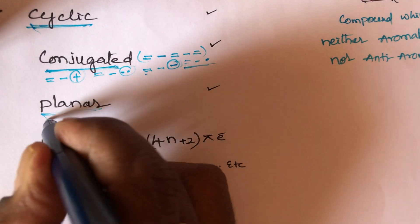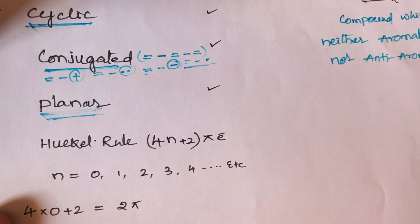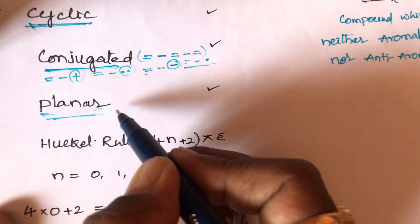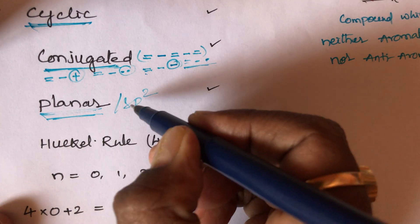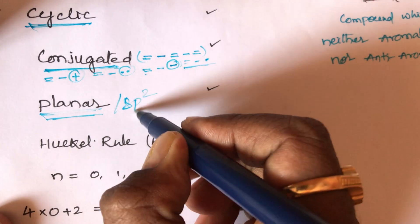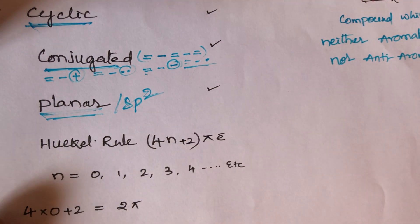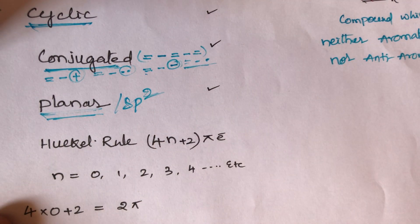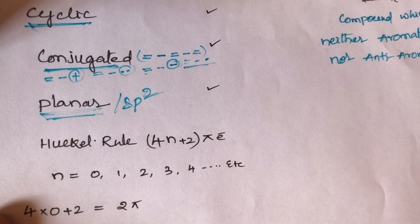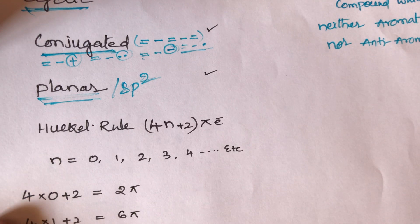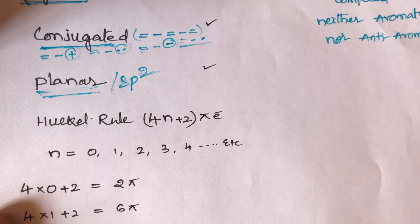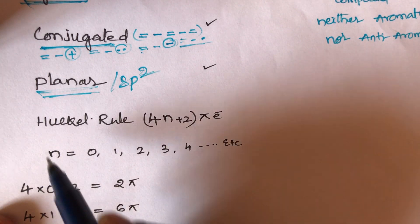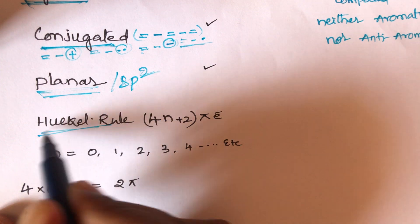Planar structure means each carbon undergoes SP2 hybridization — that gives a planar structure. That is condition three. The fourth condition is that the compound should obey Hückel's rule.